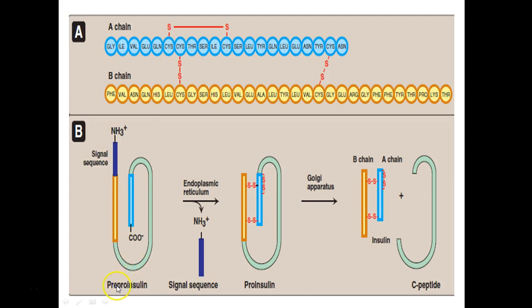This is the pre-pro-insulin molecule. When the signal sequence is cleaved off at the level of the endoplasmic reticulum, you have pro-insulin. Insulin synthesis happens in this sequence of reactions: pre-pro-insulin is converted to pro-insulin, and then pro-insulin in the Golgi apparatus, by the cleavage of C-peptide, is made into actual insulin.